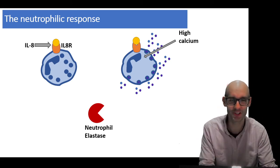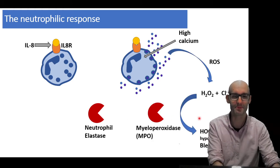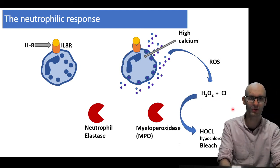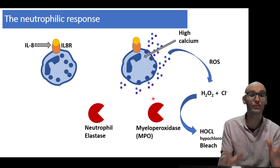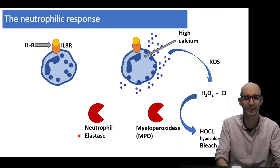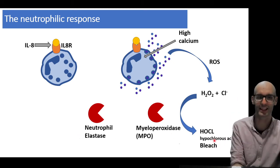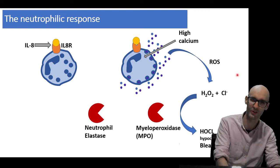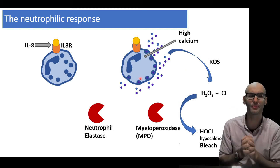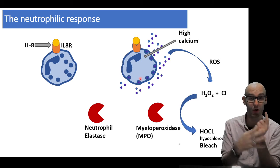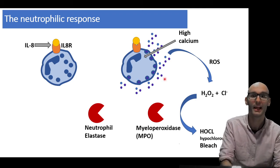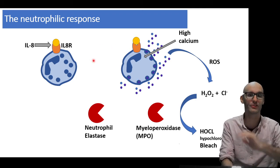Inside the granules are neutrophil elastase and myeloperoxidase, which is an enzyme that creates bleach — hypochlorous acid. Those two are absolute pathogen-killing agents. Neutrophil elastase chops up everything — it chops up fungal and bacterial proteins. Bleach sterilizes everything; that's why we use it on our bathtub, and that's why neutrophils use it. So that's the point of the IL-17 response: to pump in massive amounts of neutrophils, because we've got too much pathogen to deal with and we need to fill that zone with bleach and neutrophil elastase.